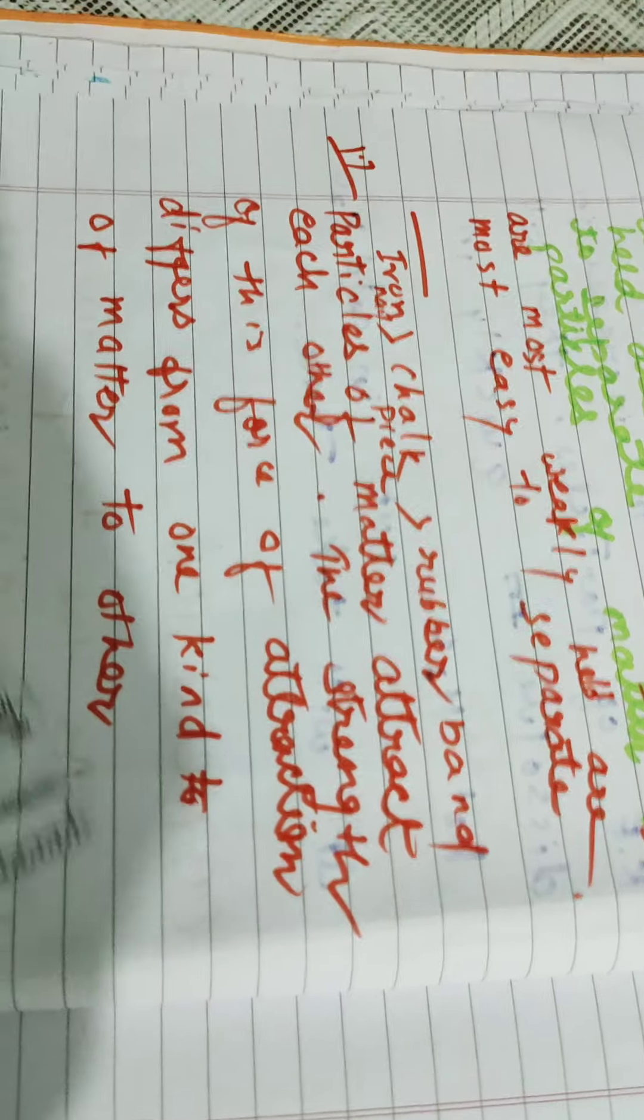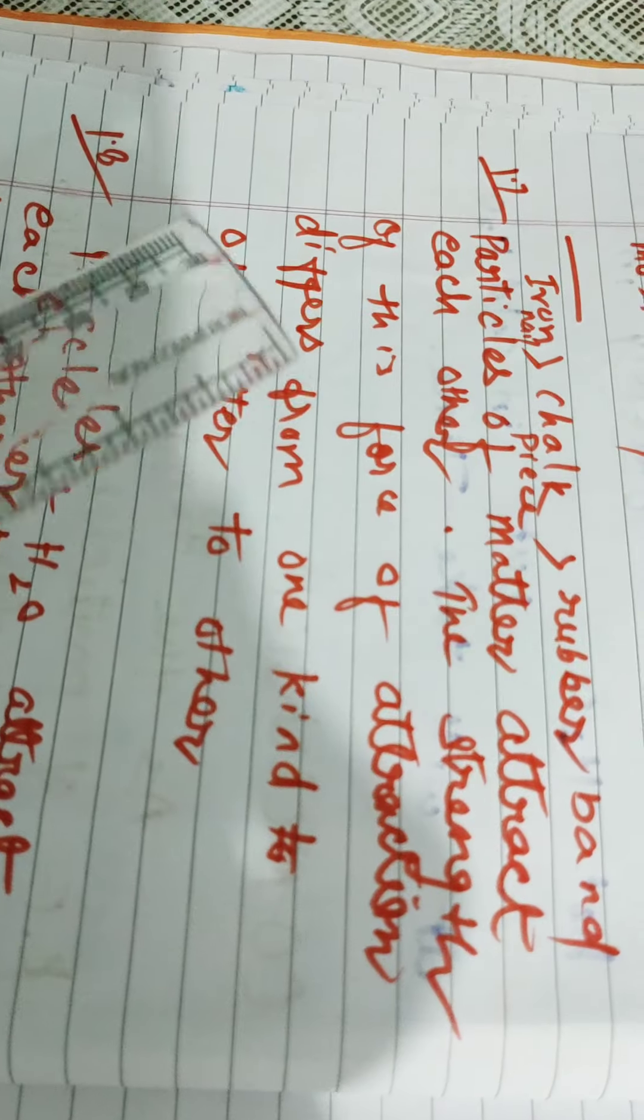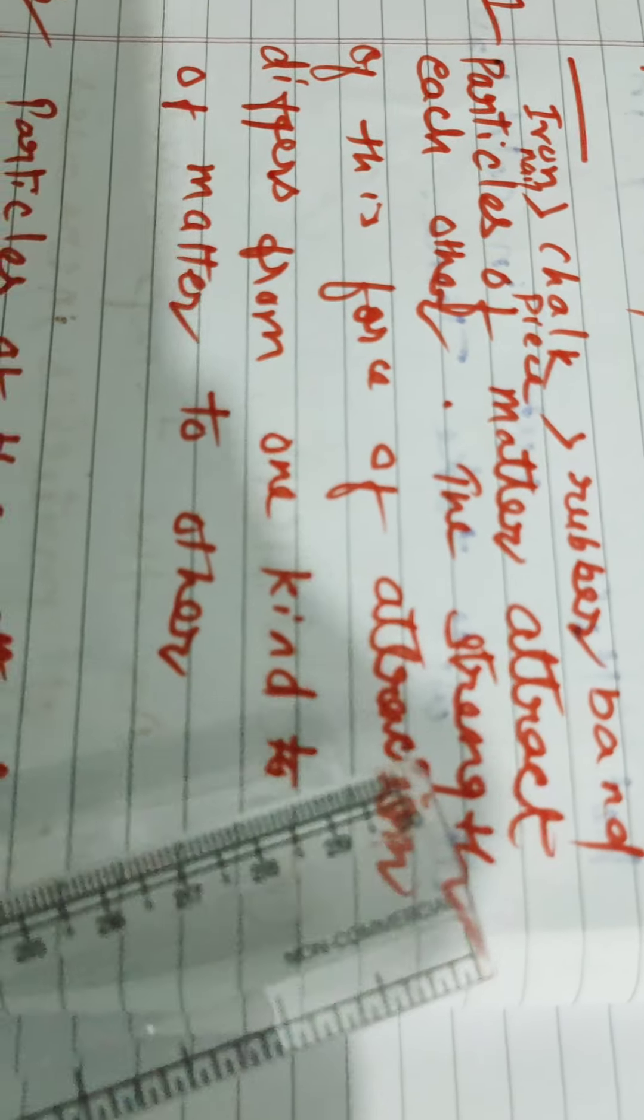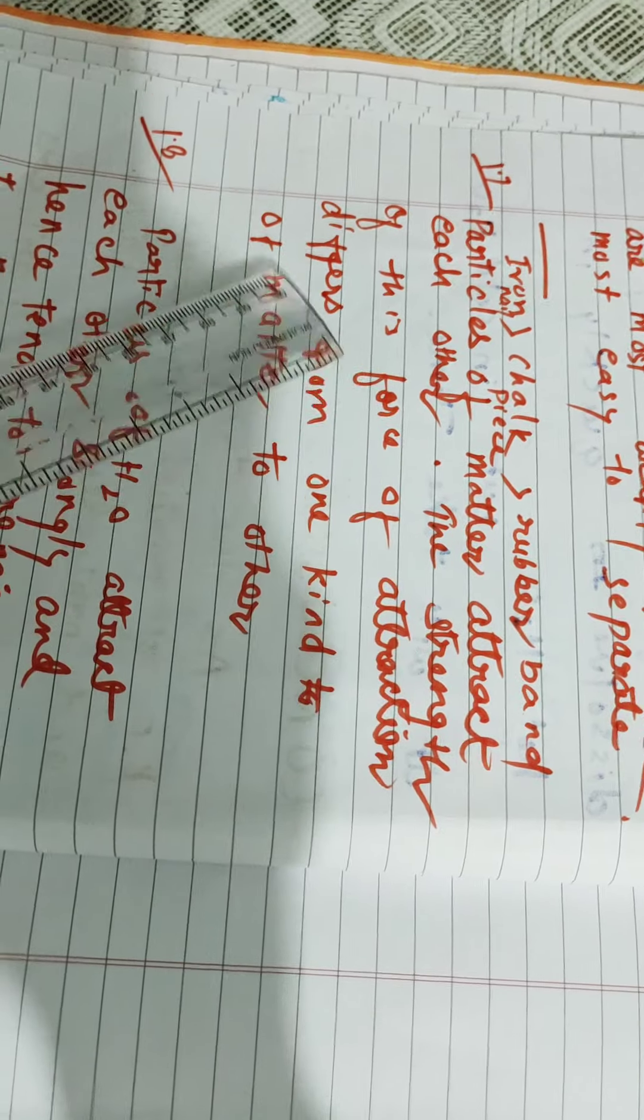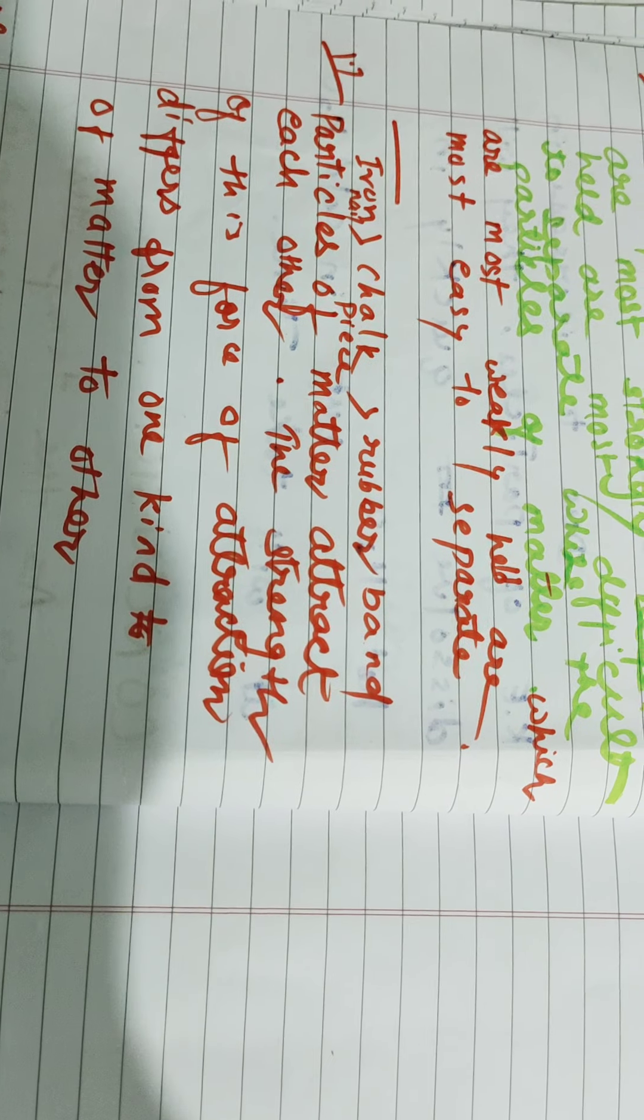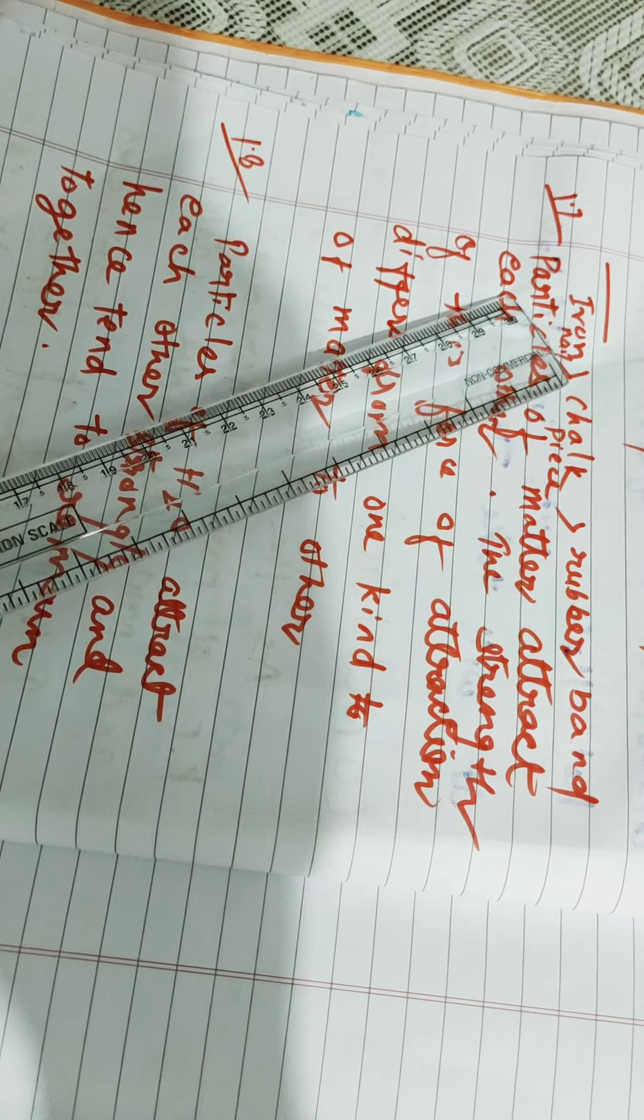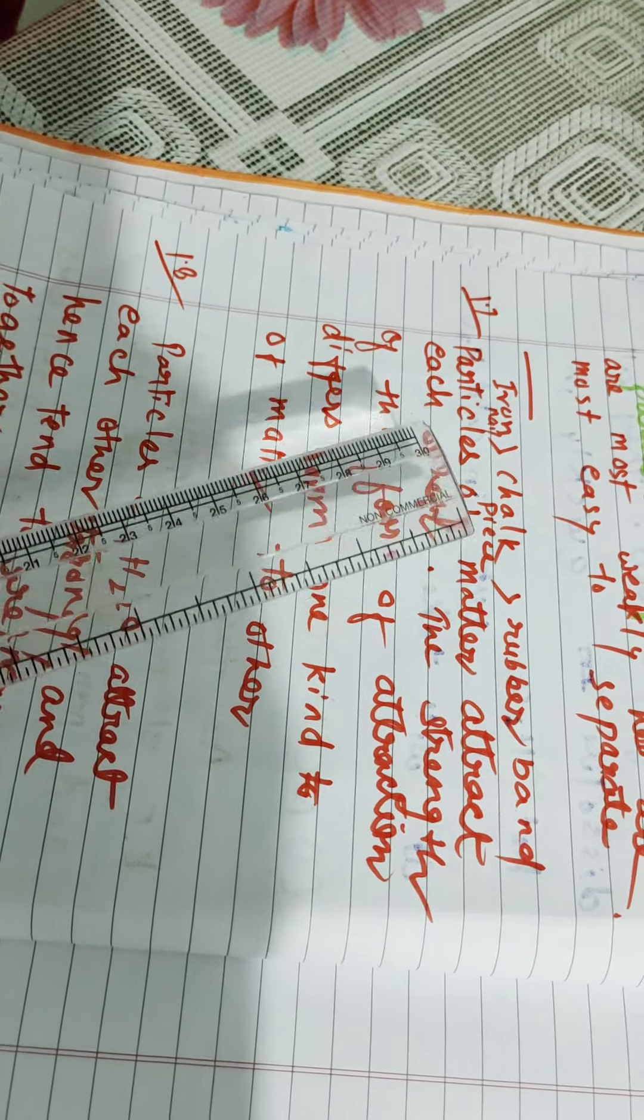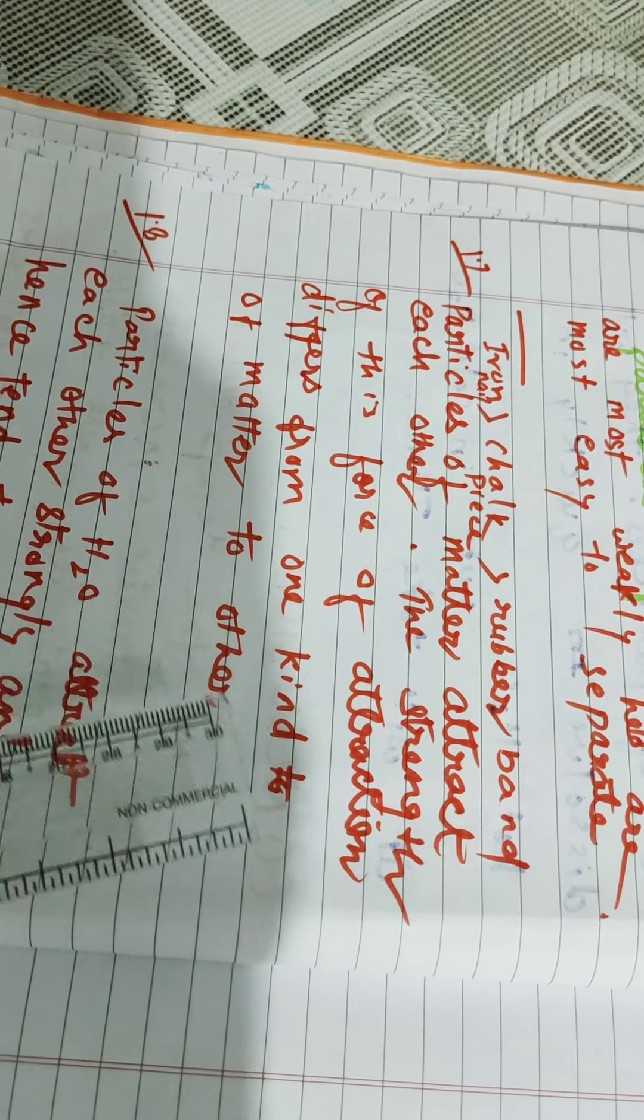We are going to see activity 1.7. Here, you have to take iron nail, piece of chalk and rubber band. You have to break them either by hammering, cutting or stretching. You will observe that particles of matter attract each other. The strength of this force of attraction differs from one kind of matter to other. It is difficult to break iron. It can be flattened when you hammer on it. Chalk is weaker than iron and rubber band. When you stretch it, it will break. This depends upon the nature of material from which it is made up of.